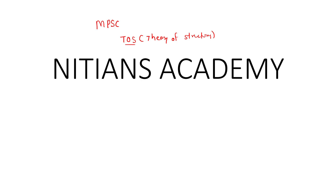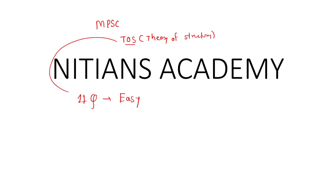The total number of questions asked from theory of structures was 11. All 11 questions were relatively easy, so you could have scored easily 11 out of 11 if you had the proper concepts. Some questions were so direct that you didn't even have to use your pen.